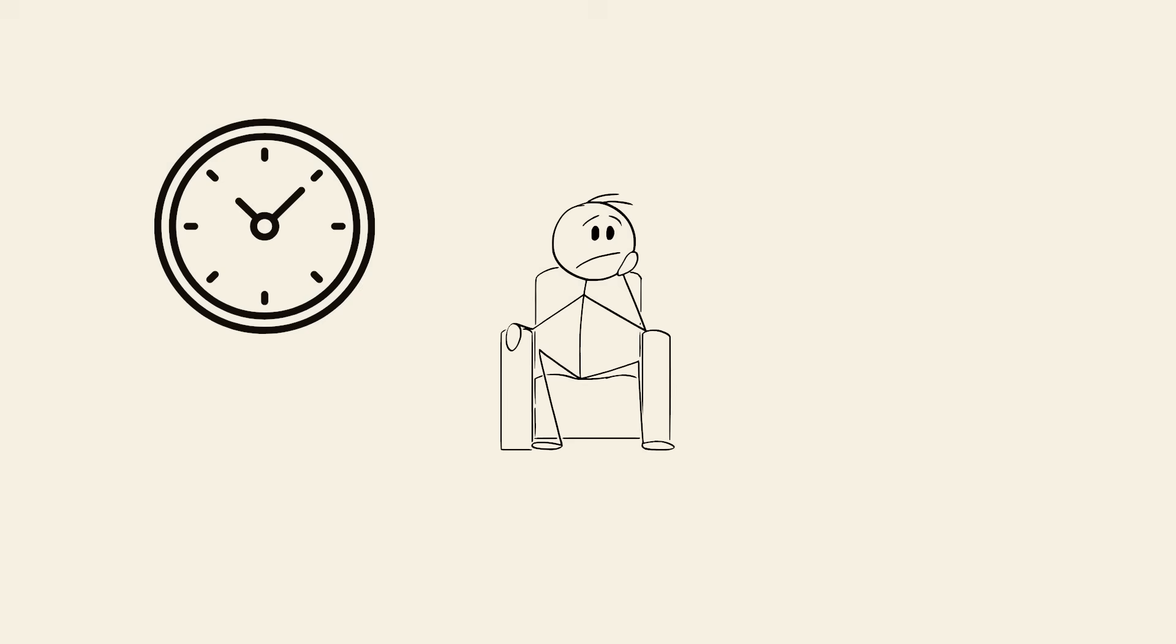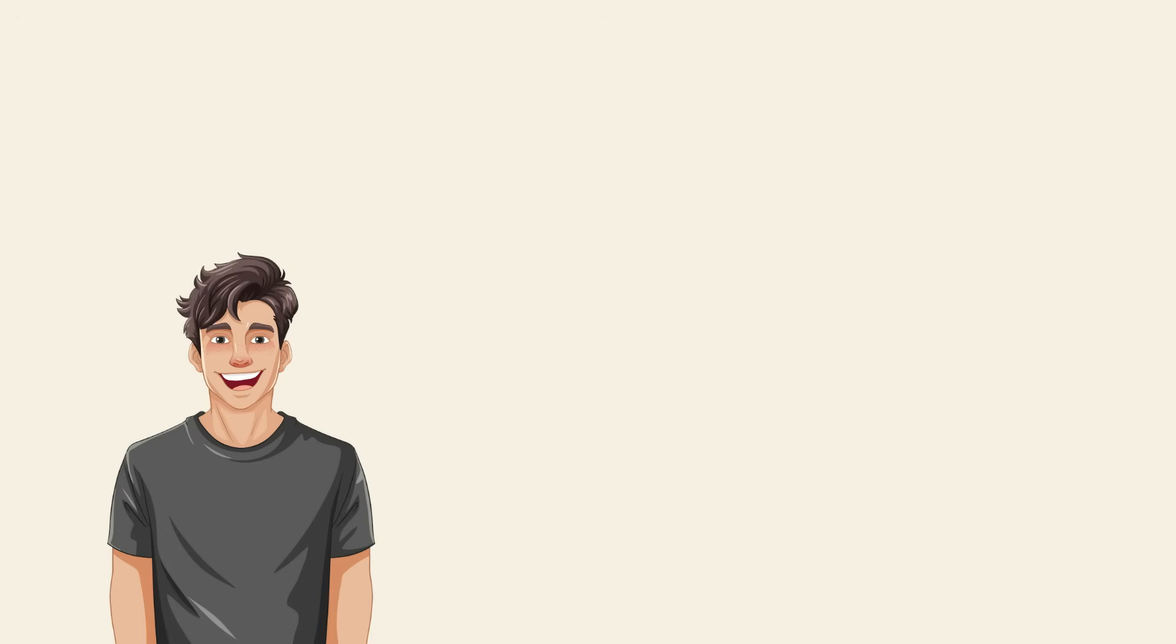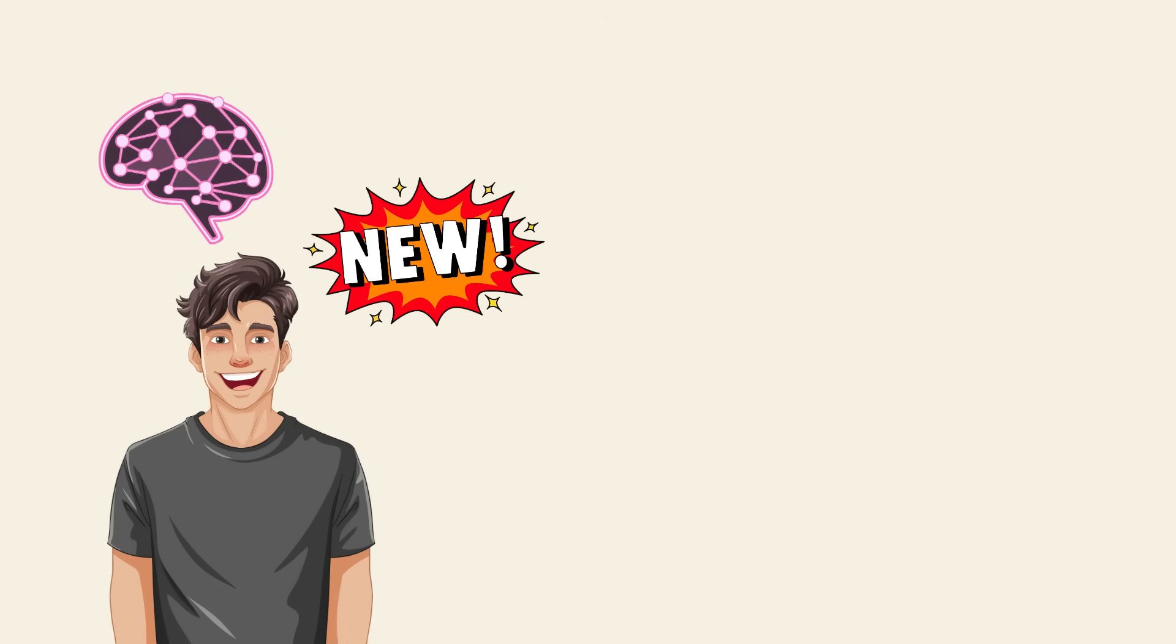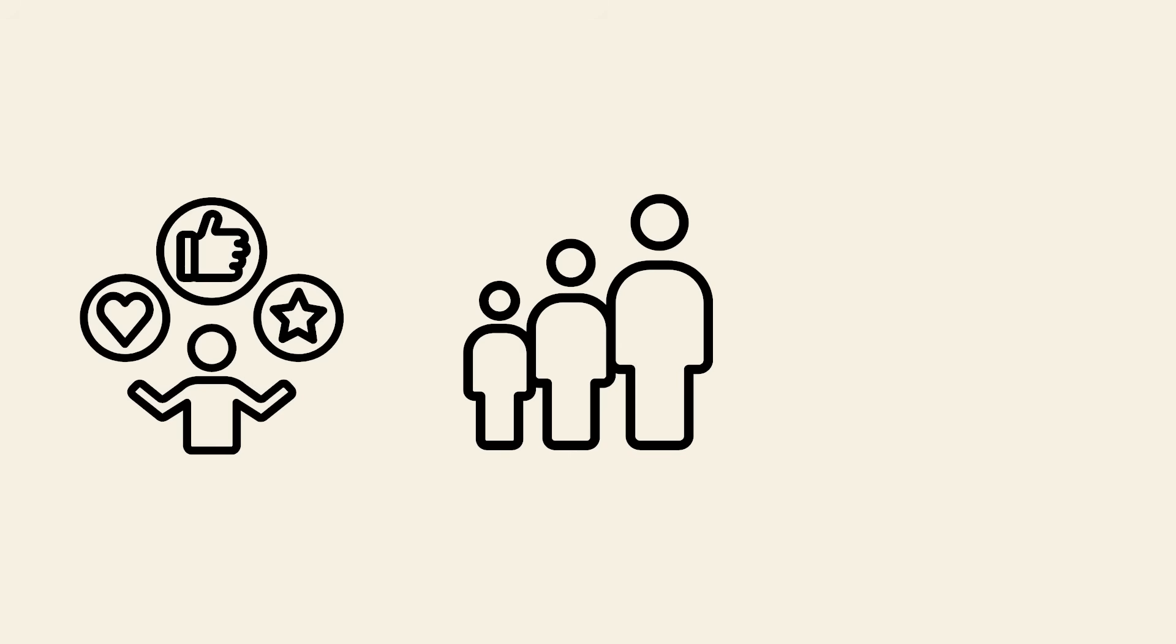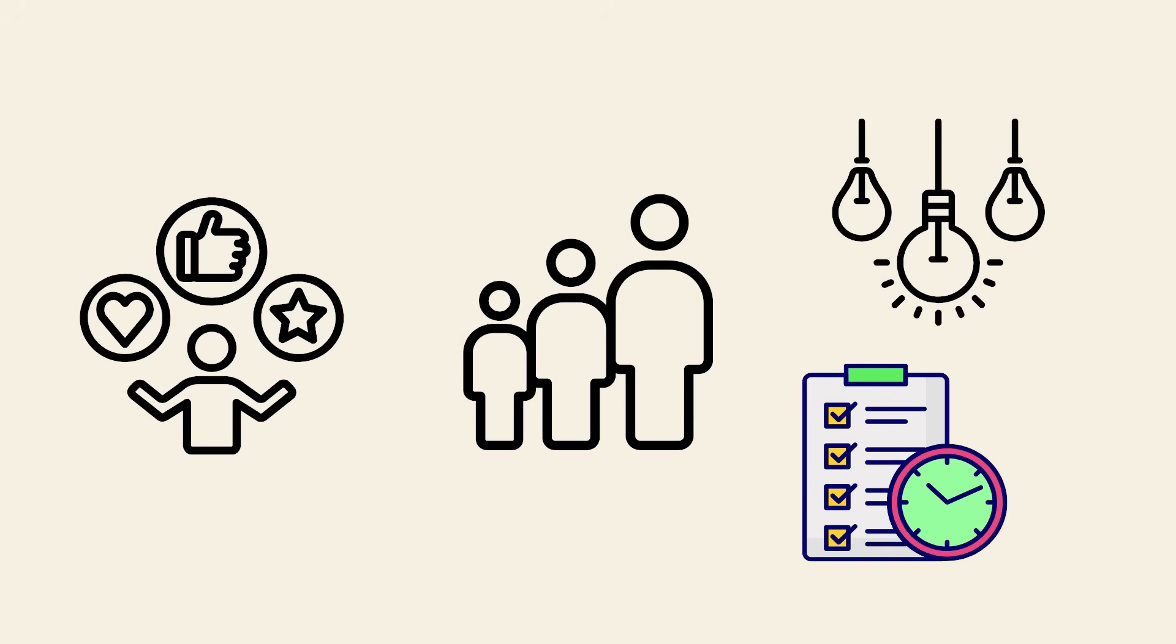The way we perceive time is influenced by how much new information we process. When you're young, everything is new. Your brain is constantly forming new connections and memories. This creates a denser mental timeline, making those years feel fuller and longer. As we age, we encounter fewer novel experiences and fall into routines, which means fewer distinct memories. Days blur together.